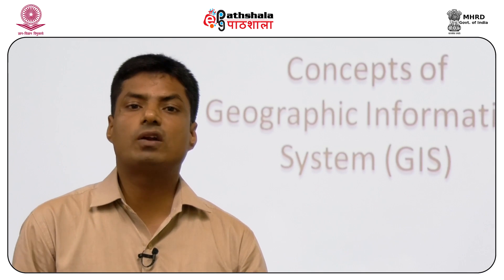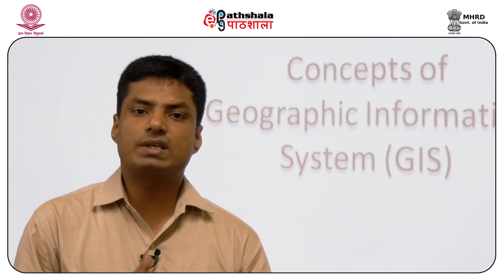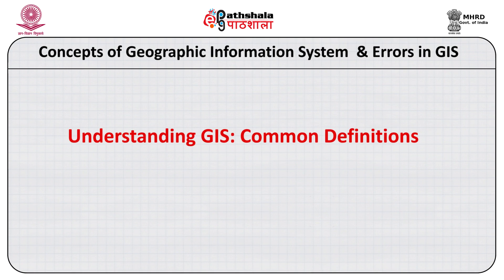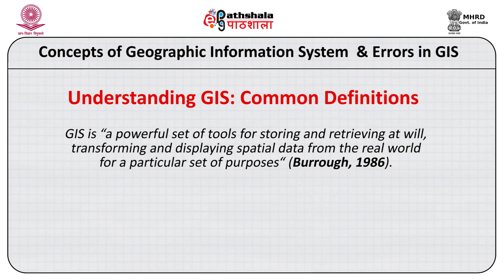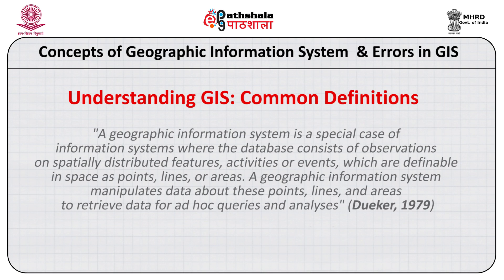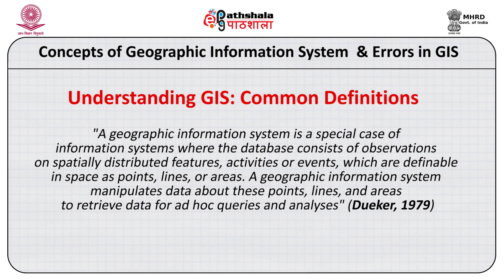There are few famous scholars who tried to define geographical information system. Brew in 1986 defined GIS as: 'A powerful set of tools for storing and retrieving, transforming and displaying spatial data from the real world for a particular set of purposes.' Another definition: 'A geographical information system is a special case of information system where the database consists of observations on spatially distributed features, activities or events definable in space as points, lines or areas. A GIS manipulates data about these points, lines and areas to retrieve data for ad-hoc queries and analysis.'